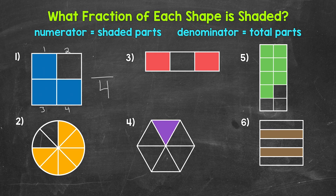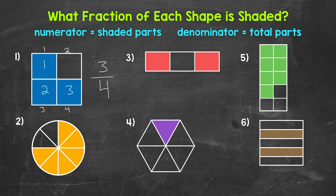Now we need the top number, the numerator. That's going to be the number of equal parts that are shaded out of the whole. So one, two, three — that's our numerator. We can see that three out of four parts are shaded. Our fraction is three over four, which we say three fourths.